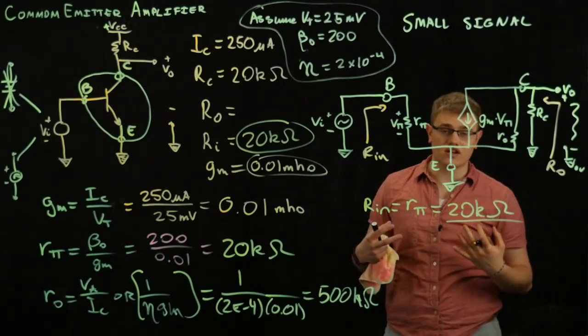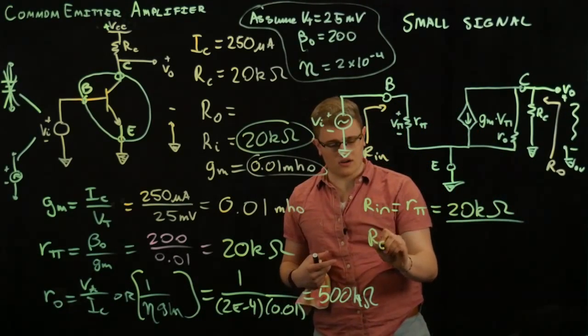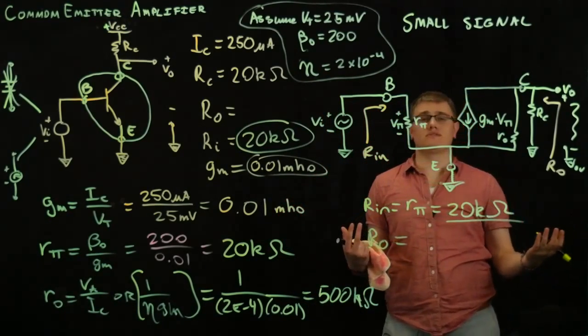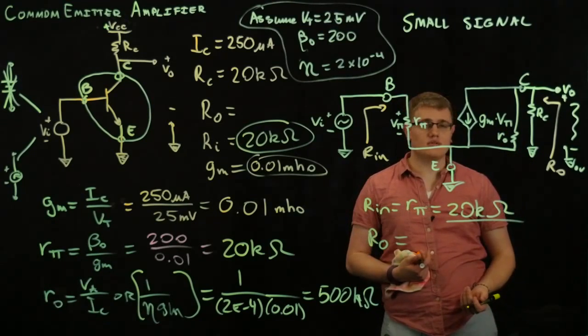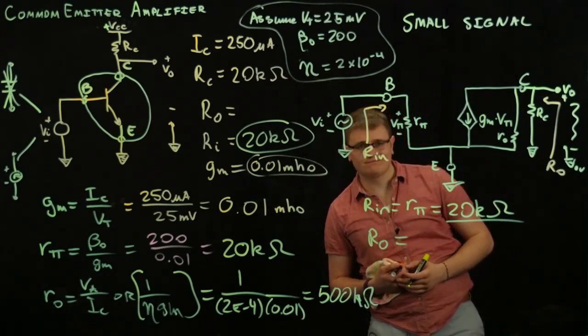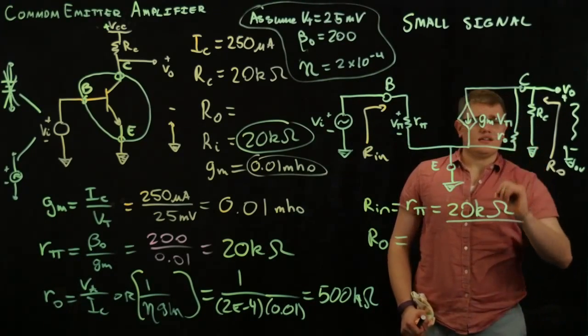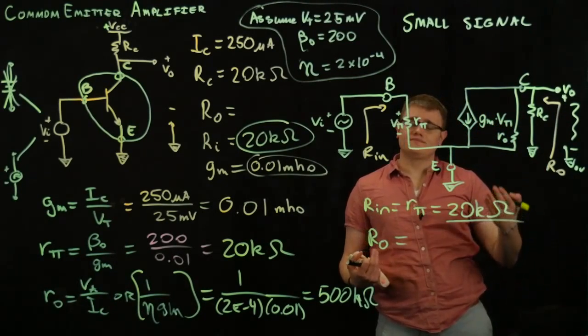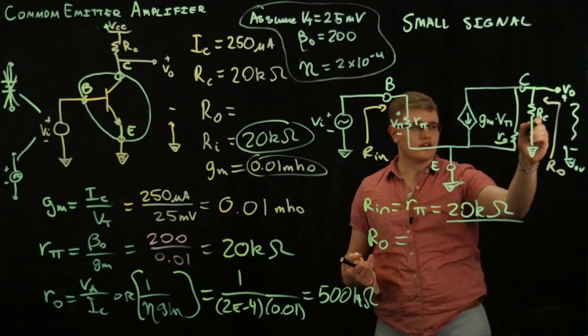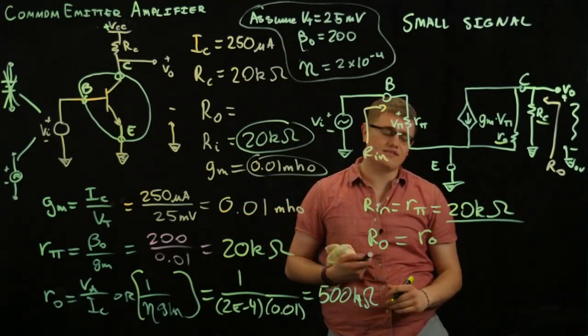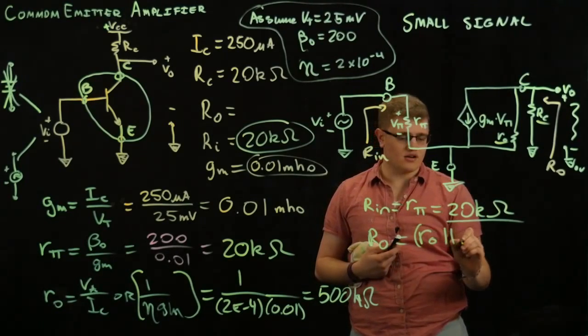Now, we'll finish it up with R out. That's going to be a little bit more difficult. Not too much more difficult, though, because it's just parallel resistors. We know how to do that. Now, which resistors are going to be in parallel? Well, it's going to be RO and RC. Do we remember RC? Yeah, we have it as one of our given values at the beginning.